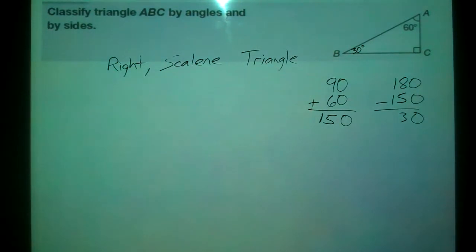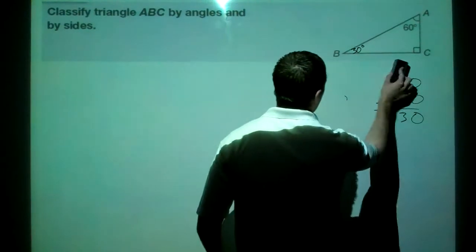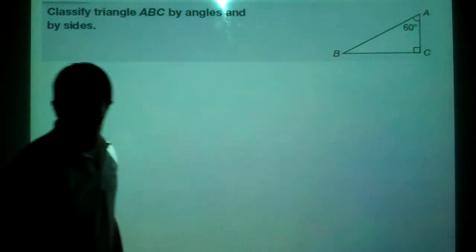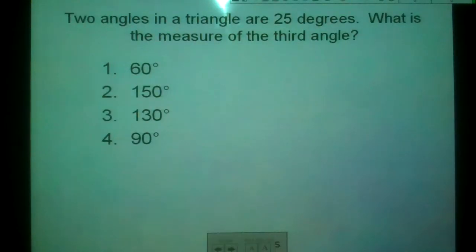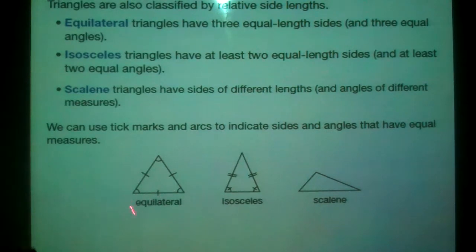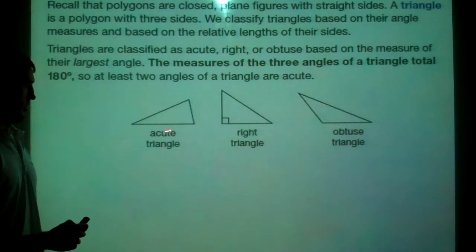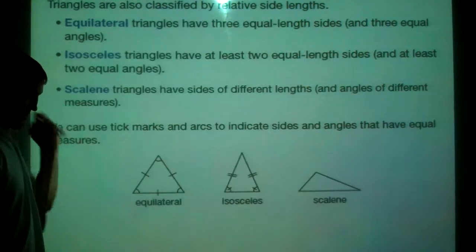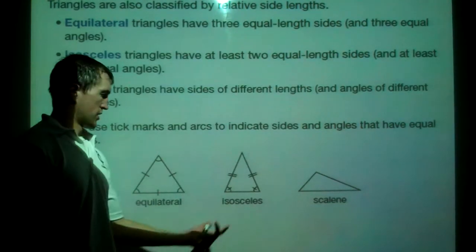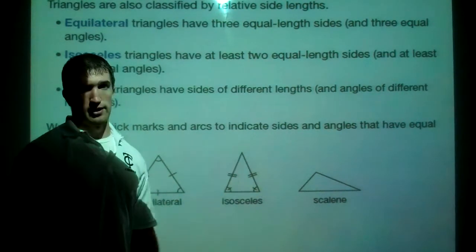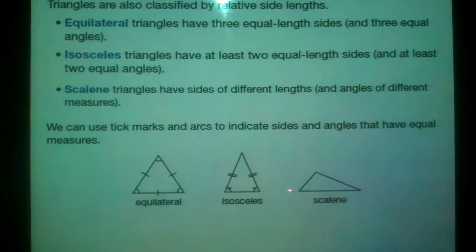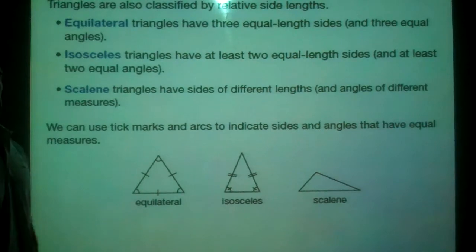Most triangles have two different names. If we look at an equilateral triangle, it would also be acute because all the angles are less than 90 degrees — so equilaterals are always equilateral and acute. An isosceles triangle can also be acute. A scalene triangle where one angle appears to be more than 90 degrees would be scalene and obtuse. So triangles will have two different names.